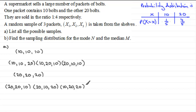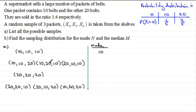Now let's work out the mode N for each sample. For the sample 10, 10, 10, the mode is 10 — it's the most frequent value. For the samples with two 10s and one 20, the mode is clearly 10 in each case. For the sample 20, 20, 20, the mode is 20. And for the three samples with two 20s and one 10, the mode is 20 in each of those as well.